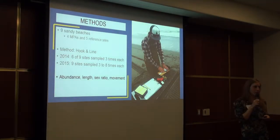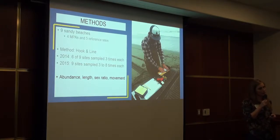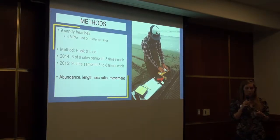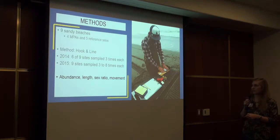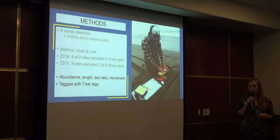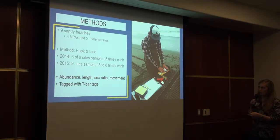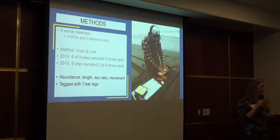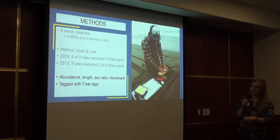For each site, we gathered information on the abundance of red-tailed surf perch, their lengths, sex ratios, and movement. To gather information on movement, we tagged the fish with T-bar tags — the little yellow bars visible in the picture. Our key findings today relate to these four types of data.